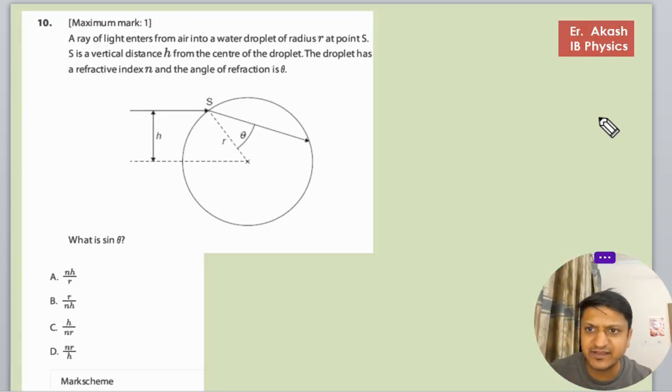So there's another question. The question says that a ray of light enters from air into a water droplet of radius r at point S. This is air, the refractive index is one, and this droplet has a refractive index of n. S is at a vertical distance h from the center of the droplet, and the angle of refraction is theta. What is sine theta?